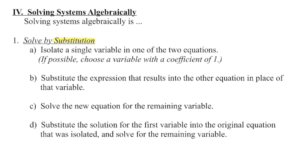We know that the solution to a system is the point on a graph where two lines intersect. So far we've been solving them graphically, but that's kind of a pain because we're constantly having to go in and adjust the window. We're going to switch gears today and look at how we can solve a system algebraically. There are two main methods, and we're going to start today with the first, which is solving it by substitution. Solving a system algebraically is going to be a lot faster than solving graphically, and there are a series of steps that we're going to follow in order to get to that solution.